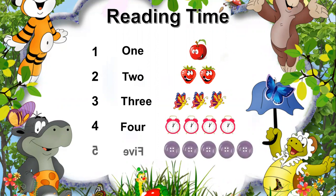Number 4: 4 clocks — F-O-U-R, 4. Number 5: 5 buttons — F-I-V-E, 5. Review: O-N-E 1, T-W-O 2, T-H-R-E-E 3, F-O-U-R 4, F-I-V-E 5. These are the numbering words — learn them!